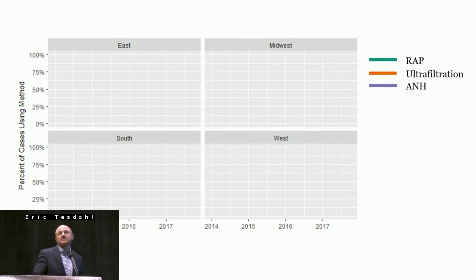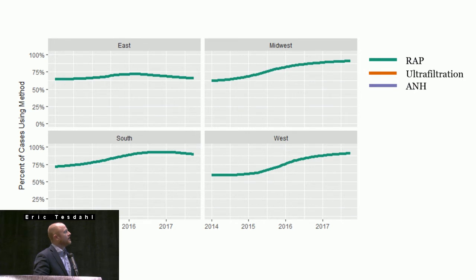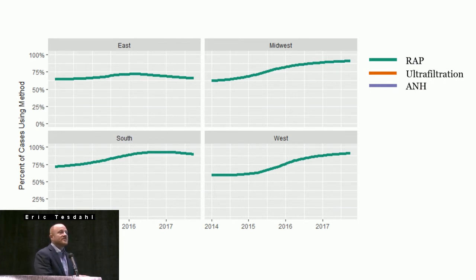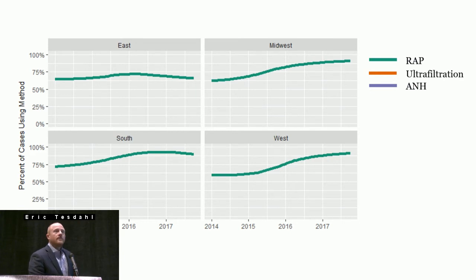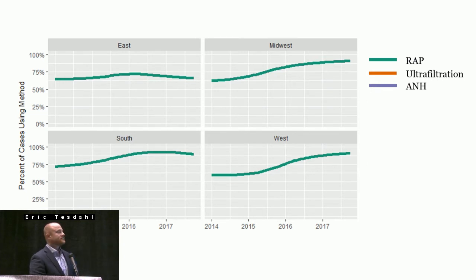Let's look at regions. We've got that simplified map of the United States. Let's just look at wrap. It's going up everywhere, but not exactly to the same degree, and it's not starting in the same place either. It looks like the west is starting a little lower than the other regions and growing in a way to catch up. This is the percentage of patients within each region, so here we're still talking about all comers.